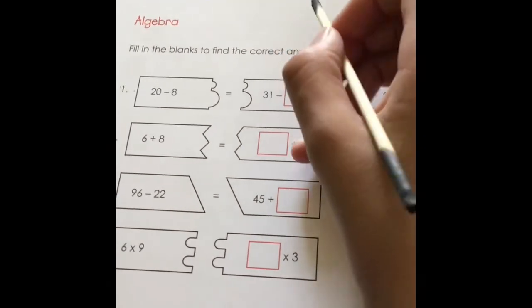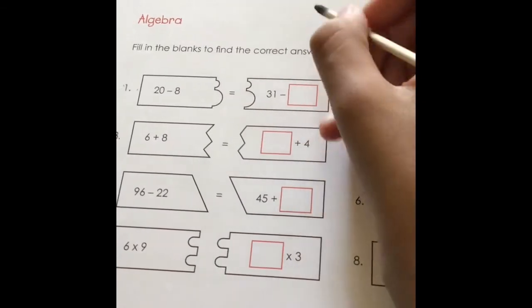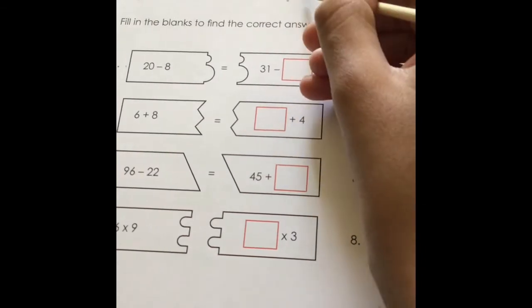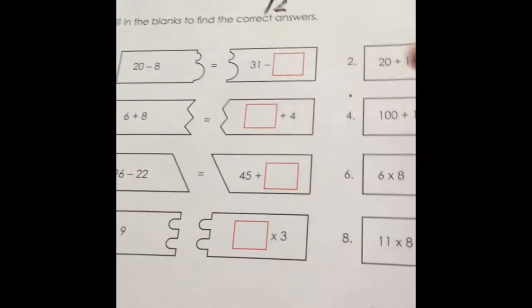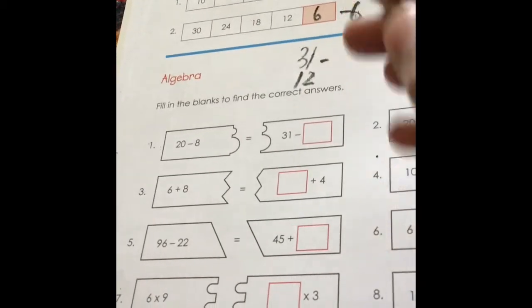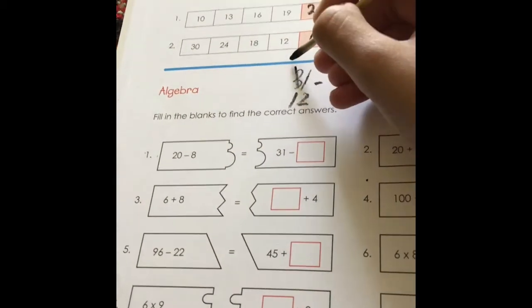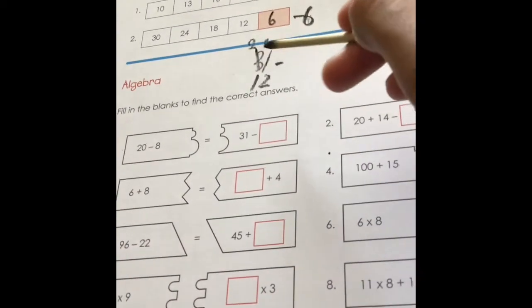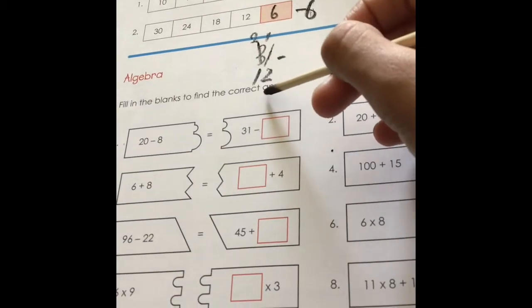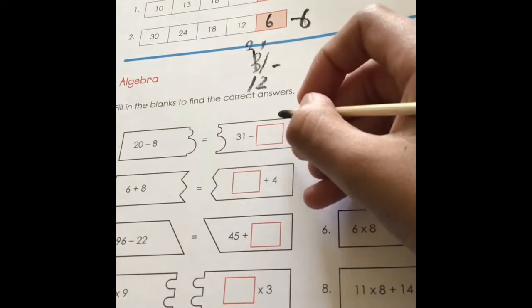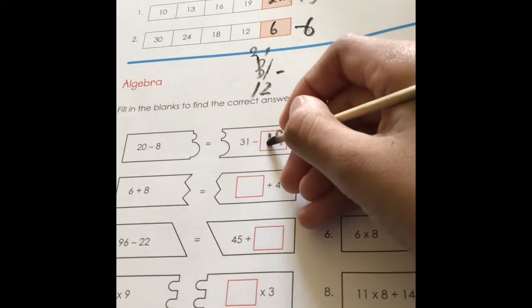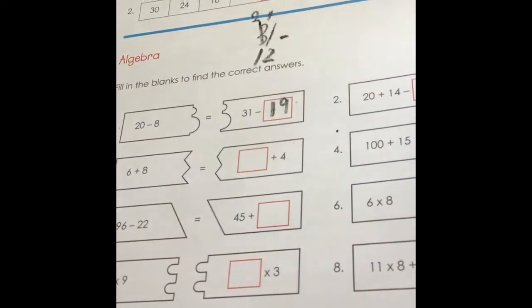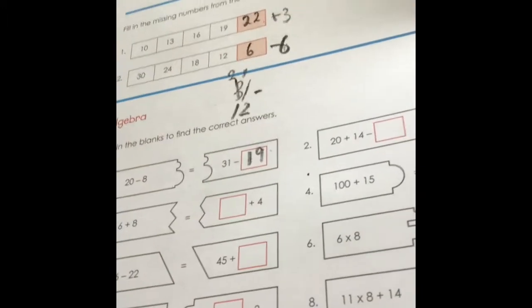So how about we do at the top, right here if you can't see. 31 take away 12. So we're going to cross this out and make 2, put 1 here. 11 take away 2 equals 9. So 9 goes right there. 2 take away 1 equals 1. So the answer is 19. 21 take away 19 should equal 12.